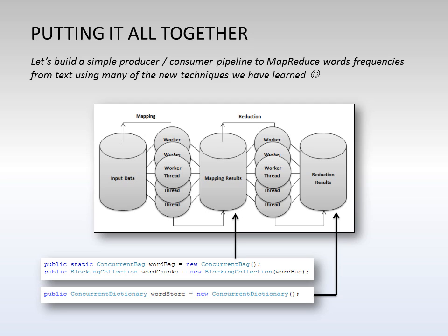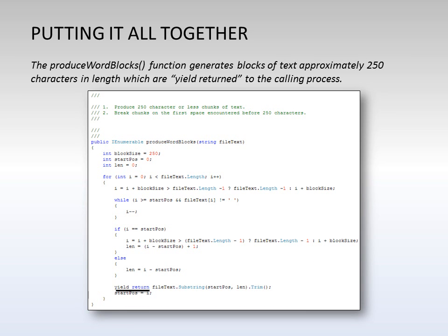Let's look at the mapping result and the reduction result section of the diagram here. What you can see is how in C-Sharp you can use a concurrent bag wrapped in a blocking collection and also a concurrent dictionary to house information in a MapReduce pipeline. For our MapReduce pipeline, we're going to use a single-threaded process to go through a large block of file text breaking it into smaller chunks which can be processed in parallel. The single-threaded process is going to use the yield return command, and as each block of 250 characters is identified, place that into a thread-safe blocking collection where a multi-threaded mapping process can go through and identify all the words within each block.